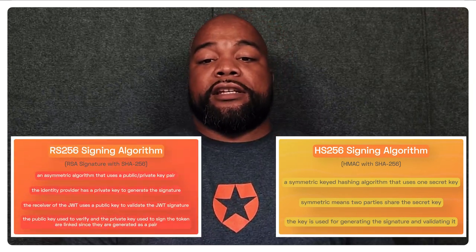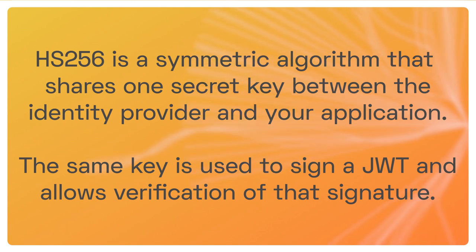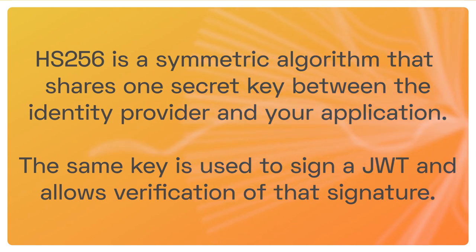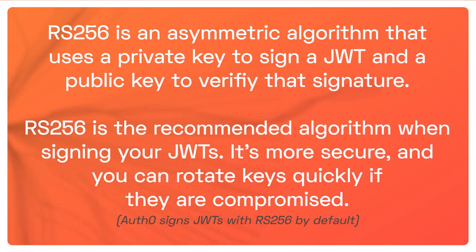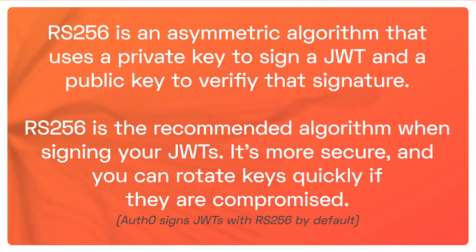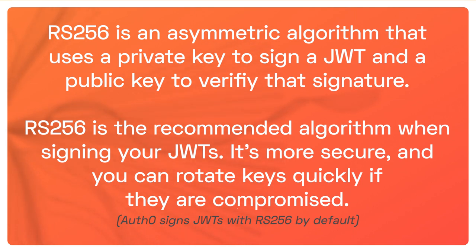In this video, you learned the key differences between HS-256 and RS-256 for JWT signing algorithms. HS-256 is a symmetric algorithm that shares one secret key between the identity provider and your application — the same key is used to sign a JWT and to verify that signature. RS-256 is an asymmetric algorithm that uses a private key to sign the JWT and a public key to verify that signature. RS-256 is the recommended algorithm when signing JWTs — it's more secure and you can rotate your keys quickly if they are compromised.